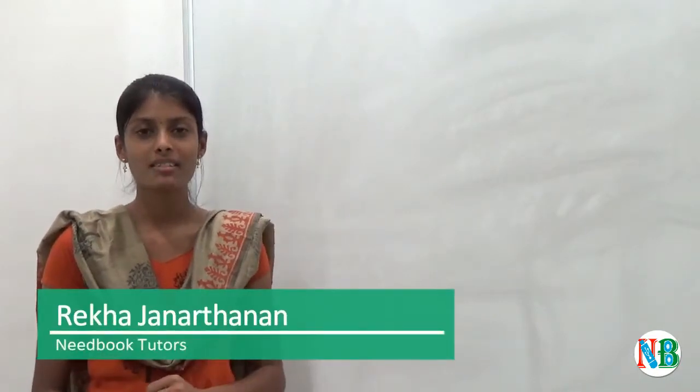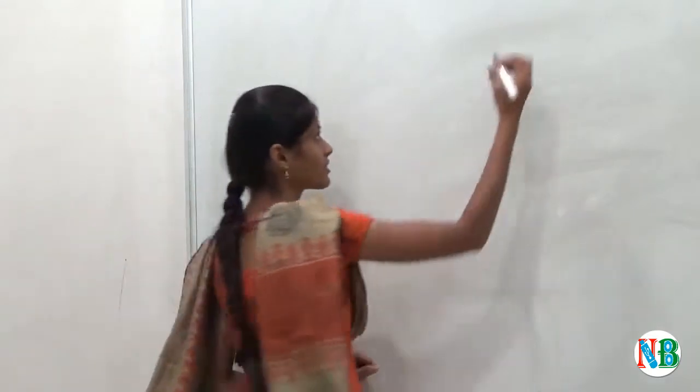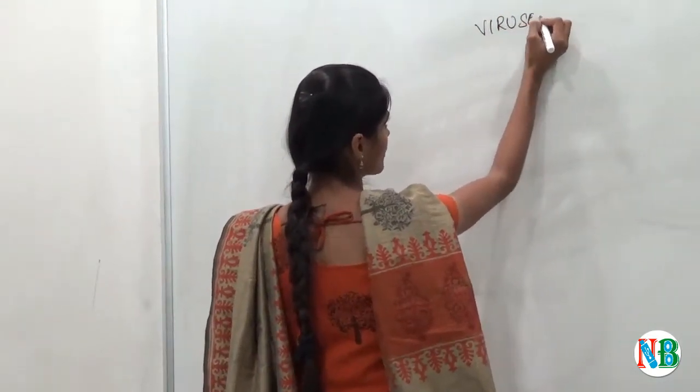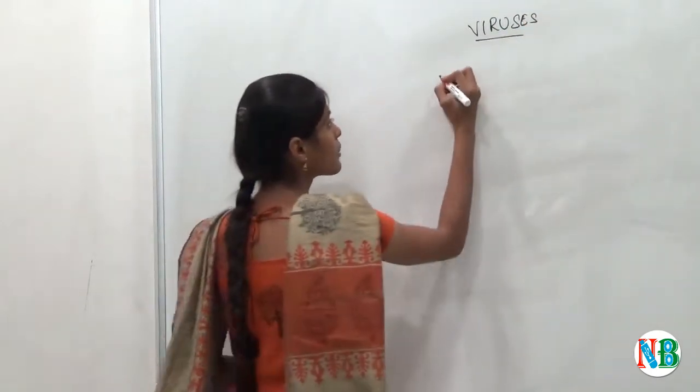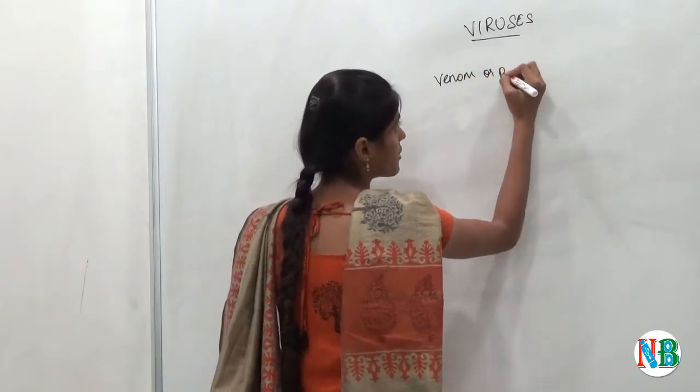Now we will see about viruses, viroids and lichens. First we will see about viruses. The name virus indicates venom or poisonous fluid.